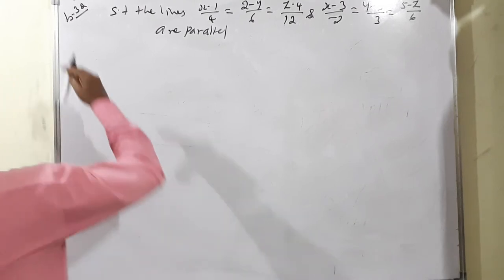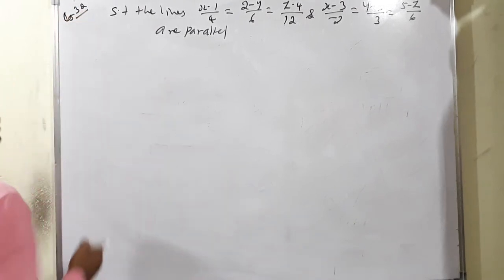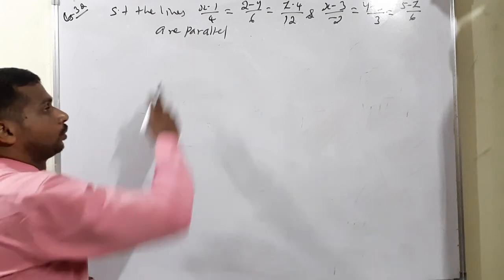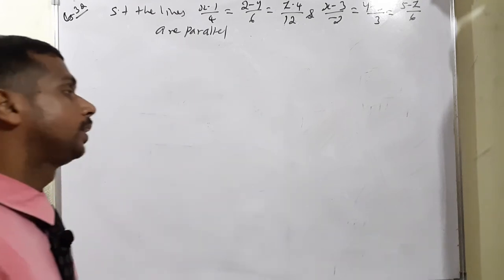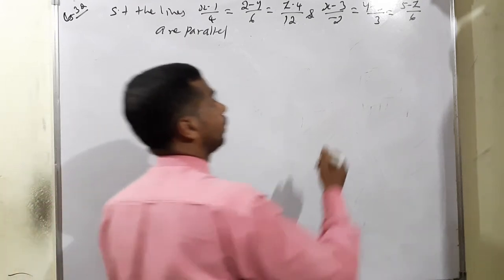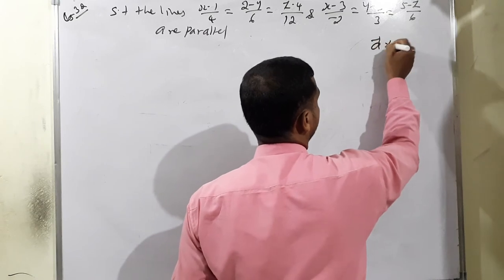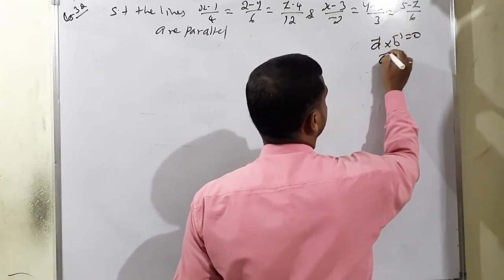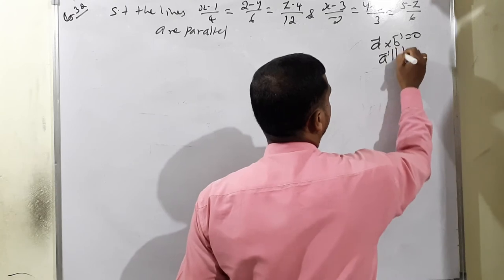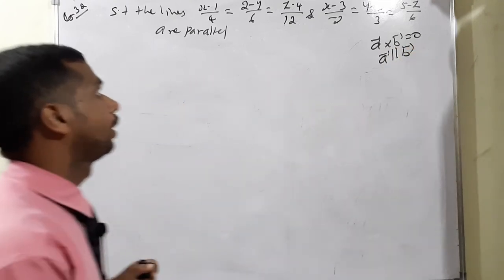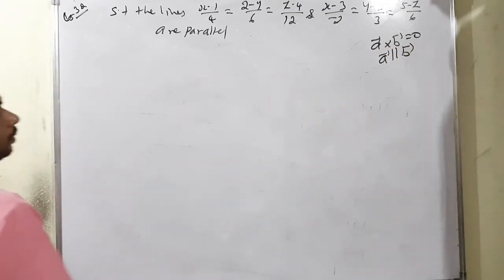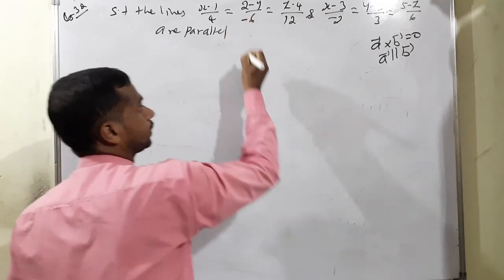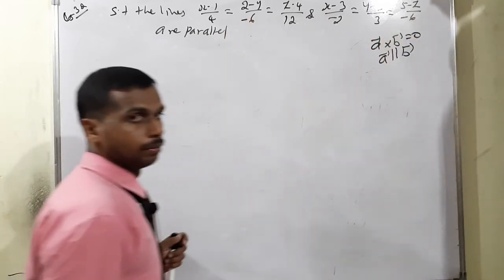Example 6.32: show that the lines are parallel. We know that a cross b equals 0 means a is parallel to b. Note: there is one correction in the question — this should be minus 6, and here also minus 6. The solution: first we find b vector and d vector from the denominator parts. The numerator is the point.